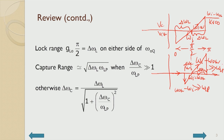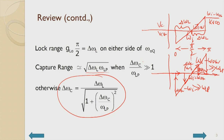The capture range equation is: delta omega_C equals delta omega_L divided by the square root of 1 plus (delta omega_C by omega_LP) squared. Under the approximation where delta omega_C by omega_LP is much greater than 1, the capture range equals the square root of lock range times omega_LP. Otherwise one has to solve this quadratic equation to get the capture range.